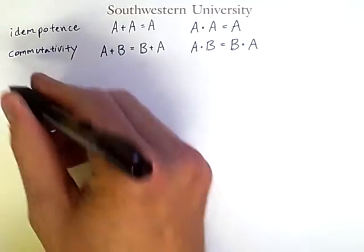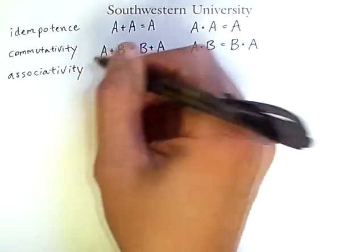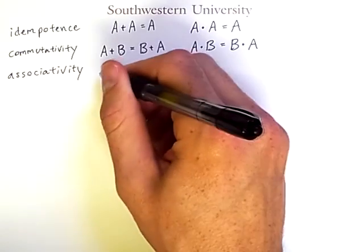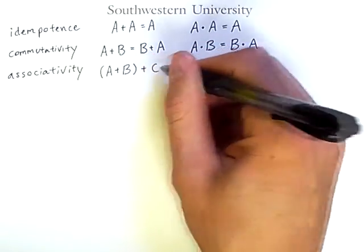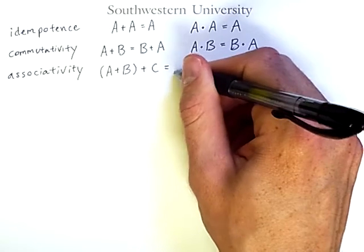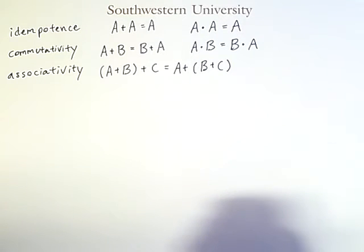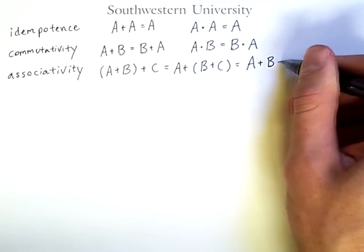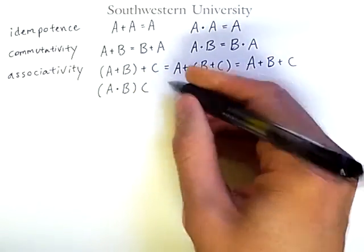Another name you may recognize is associativity, which indicates that the ordering of parentheses for certain operations don't matter. Specifically, A or B in parentheses or C is the same as A or B or C in parentheses. In fact, this law indicates that we can do away with parentheses altogether and simply express either of these as A or B or C.